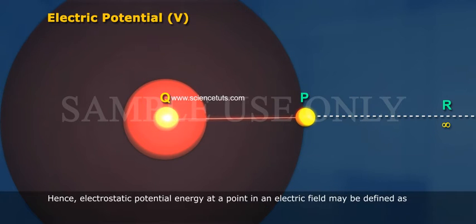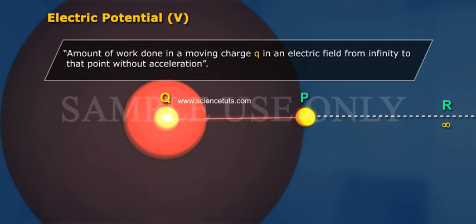Hence, electrostatic potential energy at a point in an electric field may be defined as amount of work done in moving charge Q in an electric field from infinity to that point without acceleration.